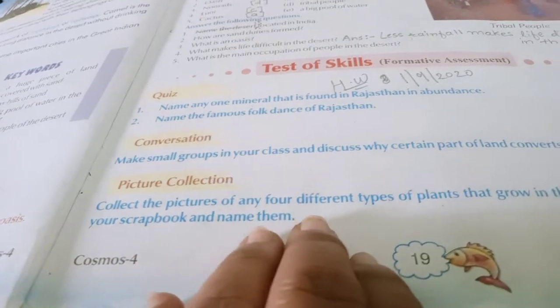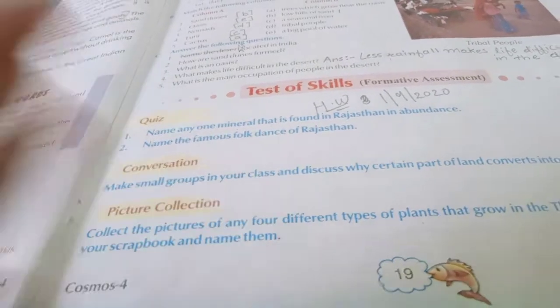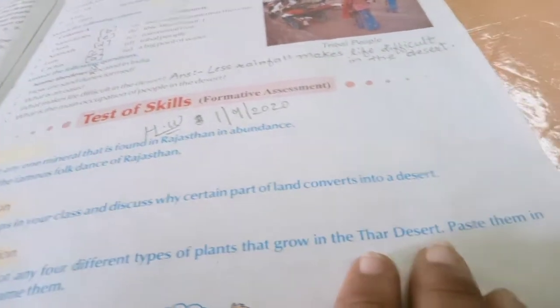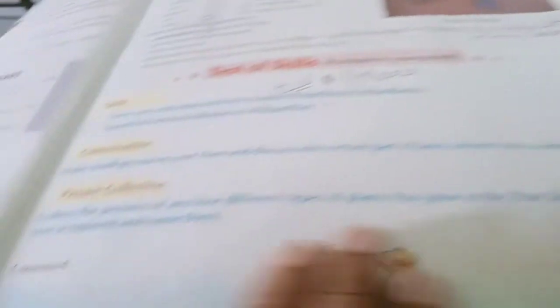And picture collection is that: collect the pictures of any four different types of plants. Aapko koi bhi chaar type ke different alag-alag type ke plants ke pictures collect karne hain that grow in the Thar Desert. Jo ki Thar Desert ya Great Indian Desert mein ugte hain. Paste them in a scrapbook. Aapko ek scrapbook leni ho usme paste karne hain, unke names likhne hain.